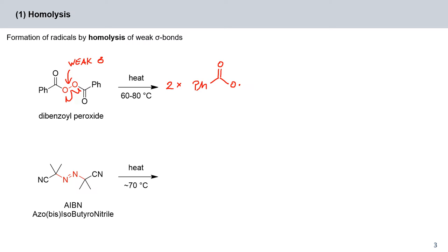Below we have AIBN, azobisisobutyronitrile. Here the weak sigma bonds which can be cleaved homolytically by heat are between the carbon and nitrogen. Now you might wonder, carbon-nitrogen bonds don't seem that weak. Normally they are not, but in this particular case when we're heating up AIBN, it's fairly straightforward to kick out a molecule.